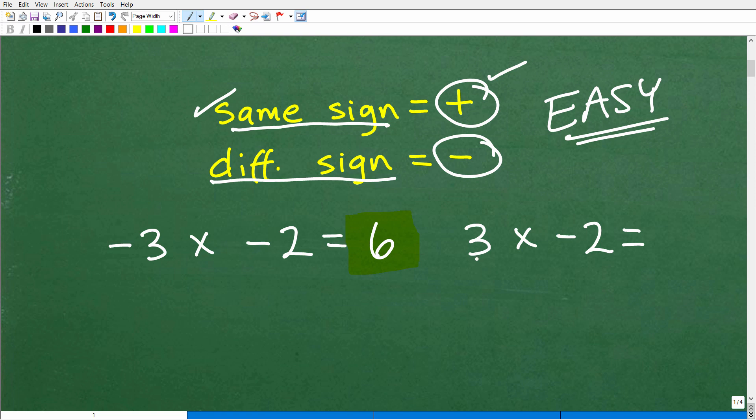Same problem. I have a positive 3 times negative 2. What's the situation with the signs? Well, in this case, the signs are different. This is positive, this is negative. So the answer is going to be negative. So this would be a negative 6.